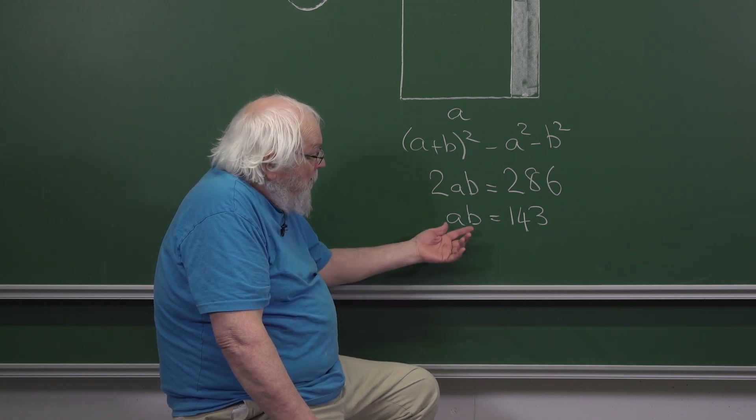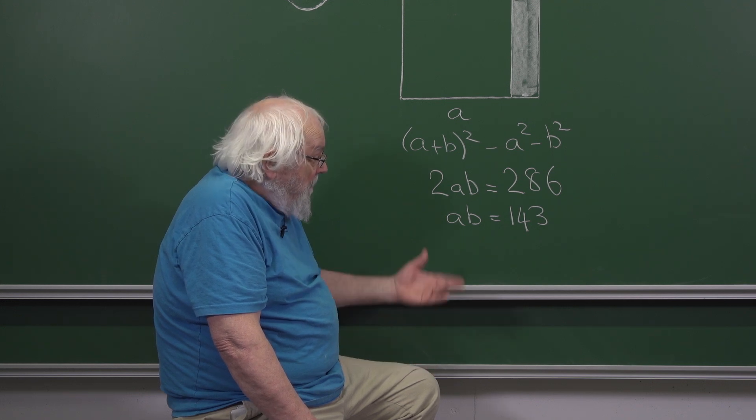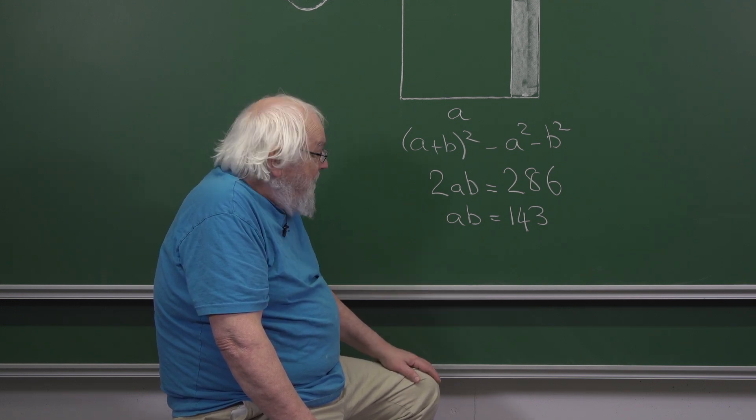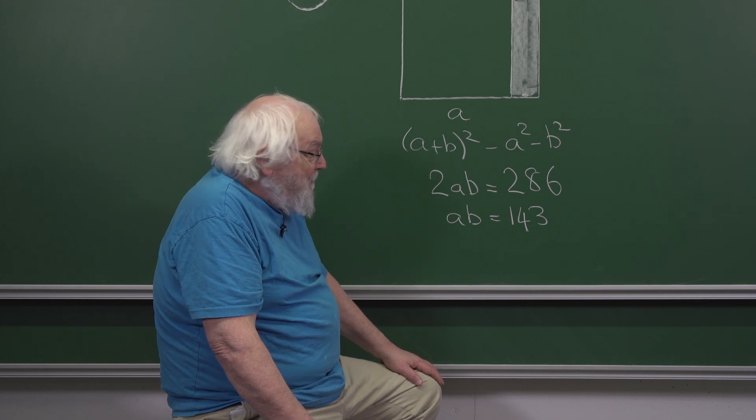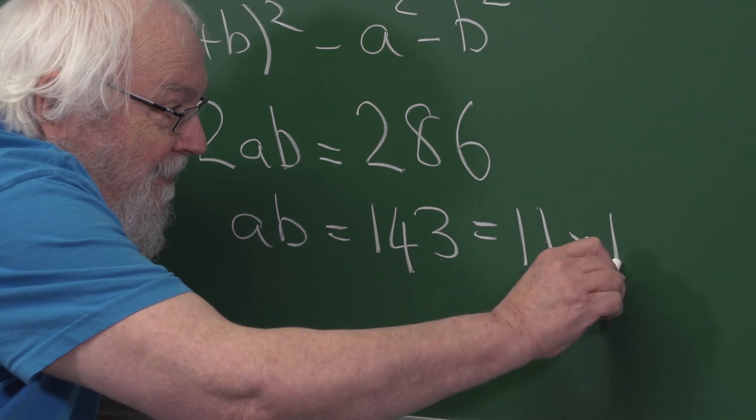We have to worry which pairs of integers can multiply to give 143. Now if you know your 13 times table, you'll know that 143 is 11 times 13.